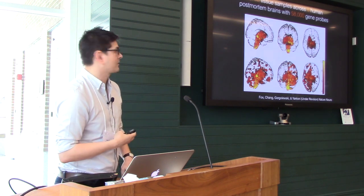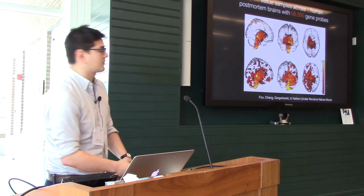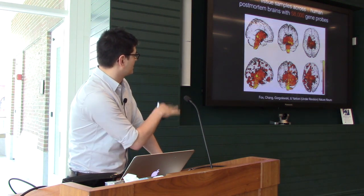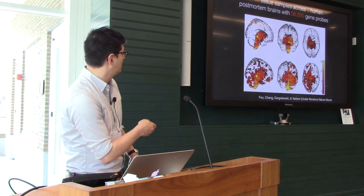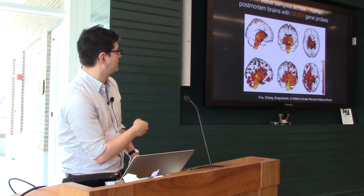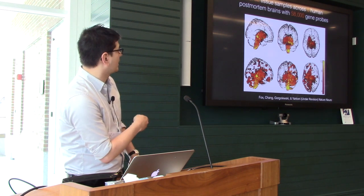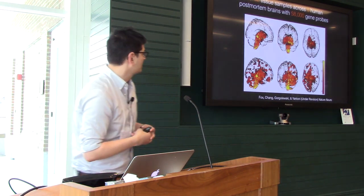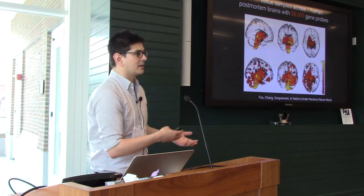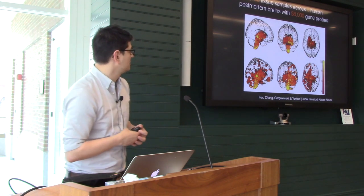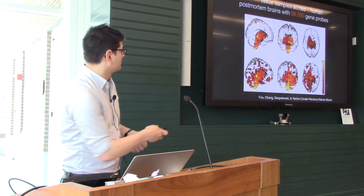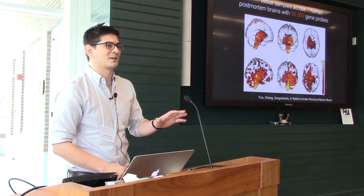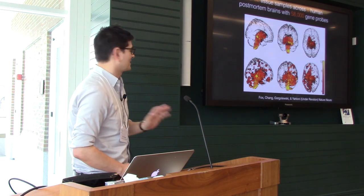We extended the decoding idea to the Allen Brain Atlas. At the time there were six human postmortem brains with 58,000 gene probes across 3,700 different tissue samples. There were a bunch of genes nobody knew anything about, and the question was: can we use what we know about how the brain is organized to make a prediction about what genes might be associated with certain cognitive functions? Everyone should be thinking there's no way this is going to work — and that's the truth. It shouldn't work. This is insane.